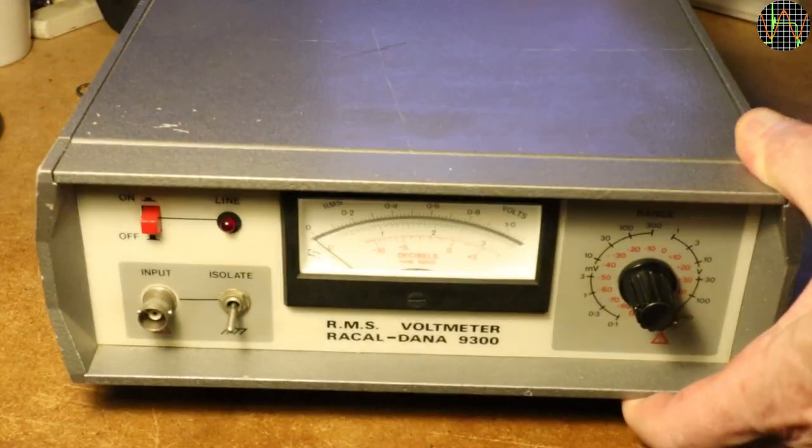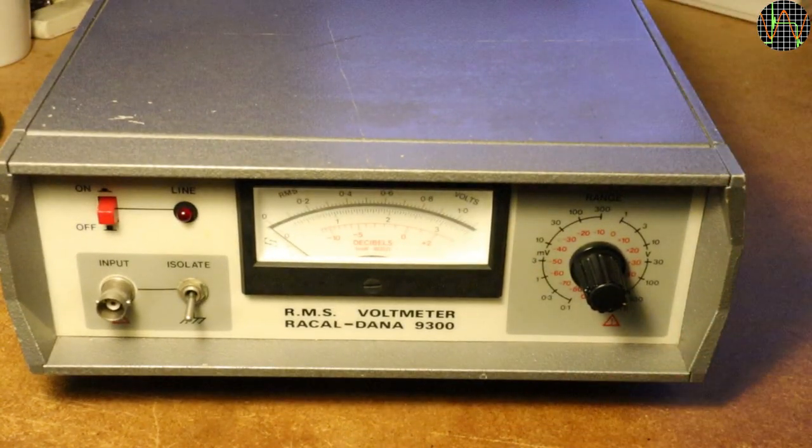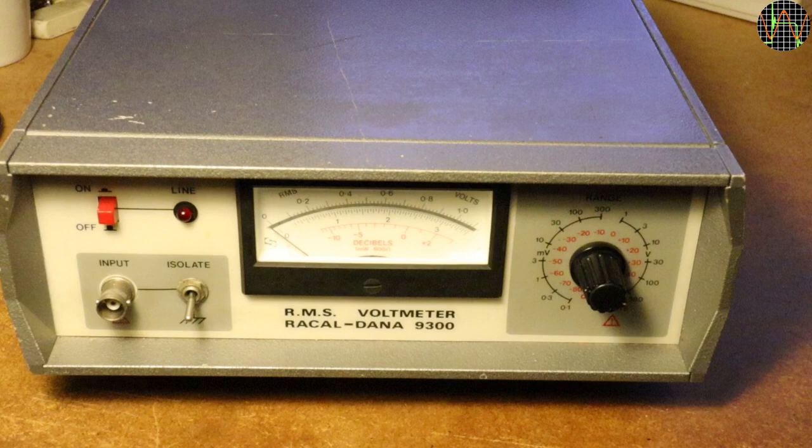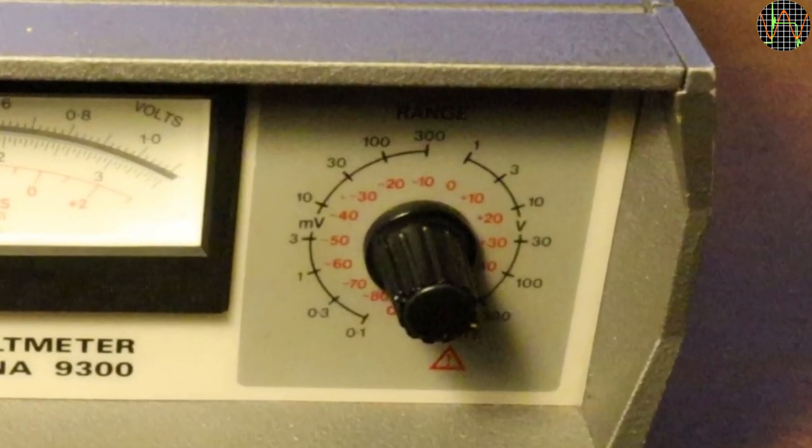You may wonder why I got this old analog meter since I already have several digital meters capable of measuring true RMS. Well, as a start, just look at the range switch. The lowest range is 100 microvolts. None of my other instruments come close, let alone at the frequency the 9300 can deal with.